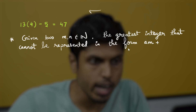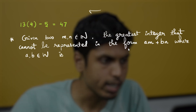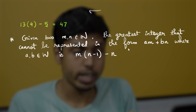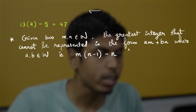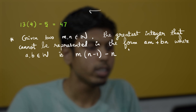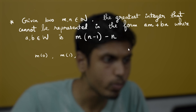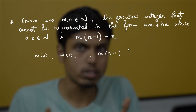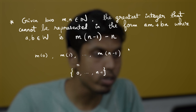Now let's generalize. Given two positive integers m and n, the greatest integer that cannot be represented in the form am + bn, where a and b are non-negative integers, is mn − m − n. This is because mn − n can be represented by taking a multiple of n, but mn − m − n cannot be represented since m×(n−1) is the first occurrence of whatever remainder it leaves when divided by n. The set {m×0, m×1, m×2, ..., m×(n−1)} constitutes the entire residue class modulo n.